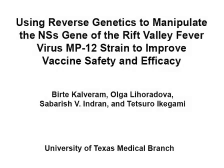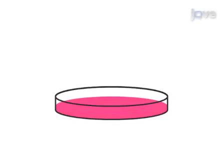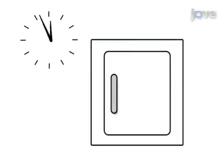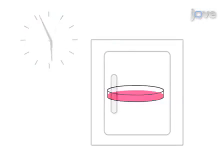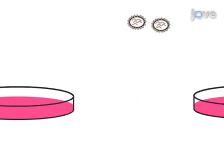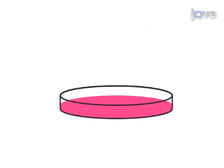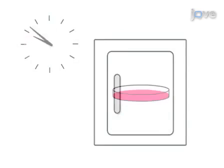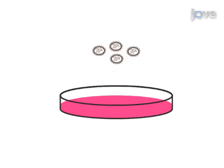This procedure generates recombinant Rift Valley fever virus MP-12 strain encoding mutated NSs by reverse genetics and aims to characterize the phenotypes for vaccine development. First, using a transfection system in BHK-T7/9 cells which stably express T7 RNA polymerase, recover recombinant MP-12 strain mutants, then amplify the recovered recombinant MP-12 strain mutant in Vero E6 cells.